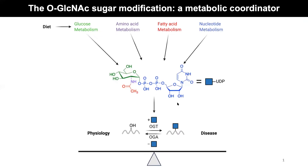O-GlcNAc is a post-translational modification that is synthesized from the four major metabolic pathways in cells. This sugar modification is attached to serine and threonine residues in proteins by the action of the enzyme OGT, and it is removed by the enzyme OGA. In cells, you want to have a proper balance of this sugar modification on proteins, which is important from a physiological perspective. If the balance is disturbed, that can lead to diseases observable in the organism.